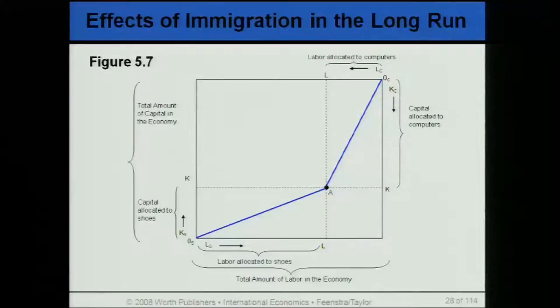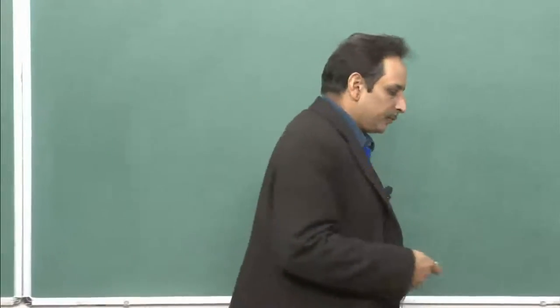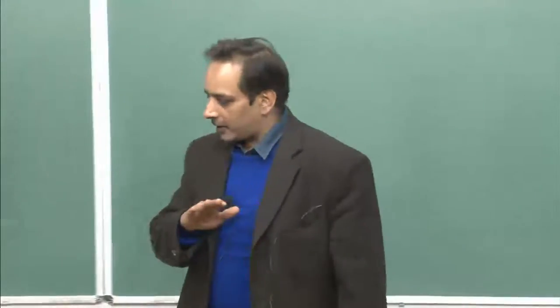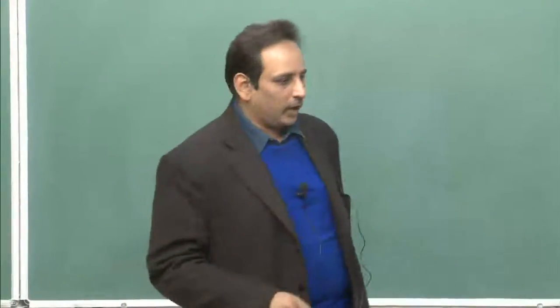The Rybczynski theorem states that an increase in supply of a factor, keeping product prices constant, increases the output of the commodity which uses the expanding factor intensively and decreases the output of the other commodity. So in the long run there will be a change in the output mix — an increase in production of the labor-intensive product and a decline in production of the capital-intensive product — assuming that product prices, relative wage rates, and the capital-labor ratio do not change, so marginal productivities do not change.